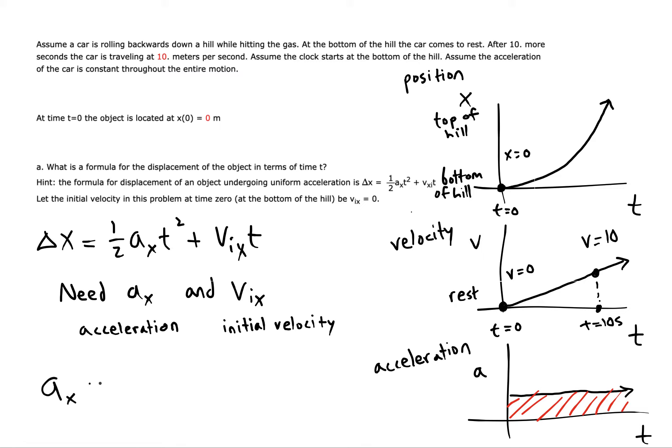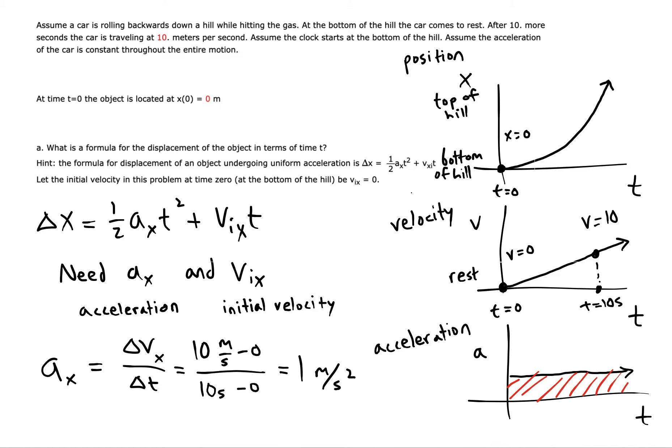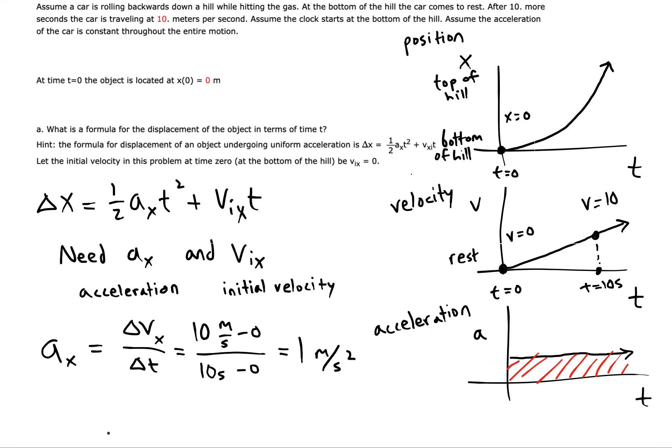Okay, so the formula that you'd use is a equals delta v over delta t. So you would get 10 meters per second minus zero over 10 seconds minus zero. One meter per second squared. Alright, yeah, so I agree on the acceleration.